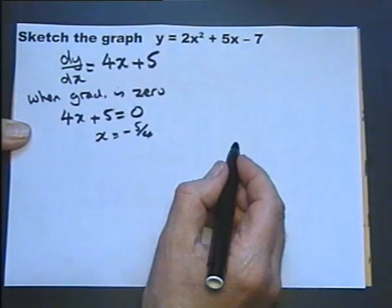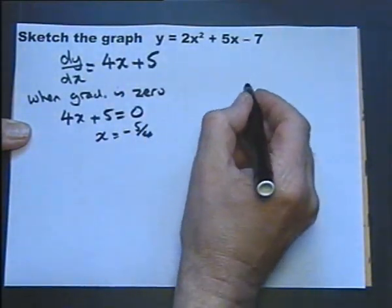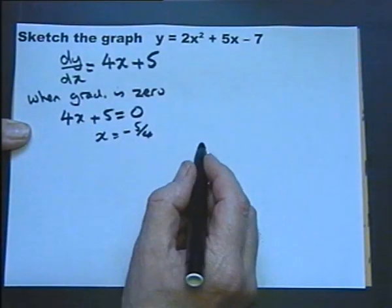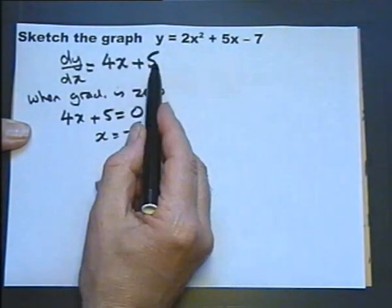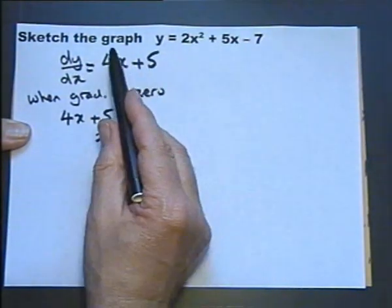Now because it's a parabola, we know it's a minimum point, but we could use d2y dx squared and differentiate this again. And if we differentiate this again,